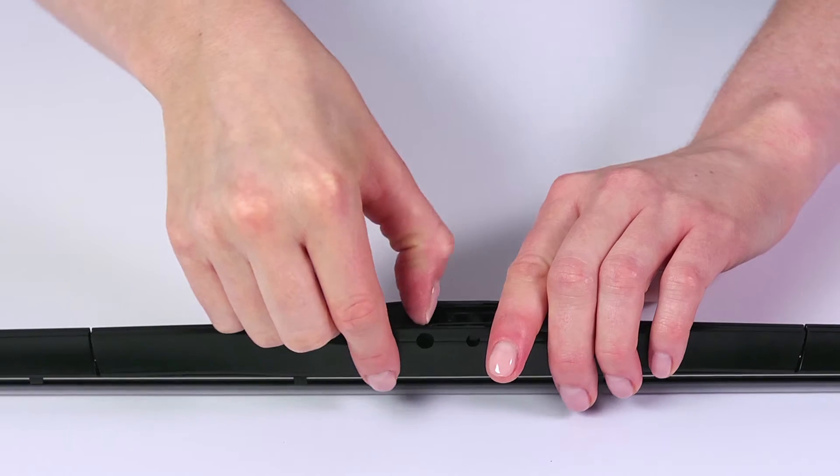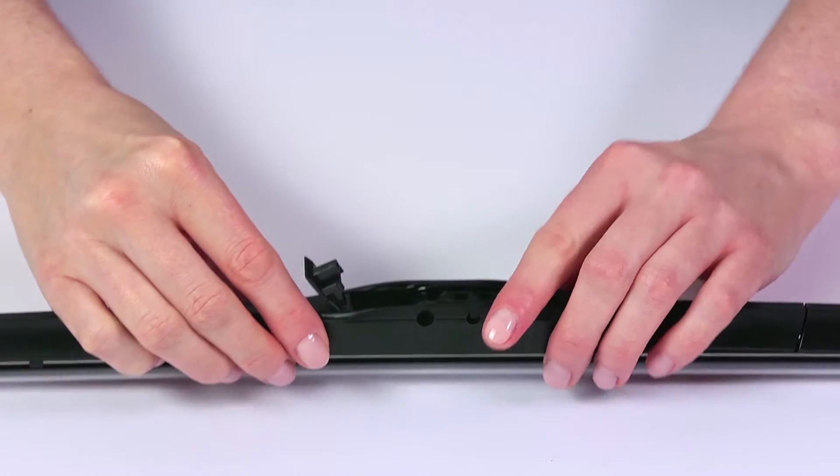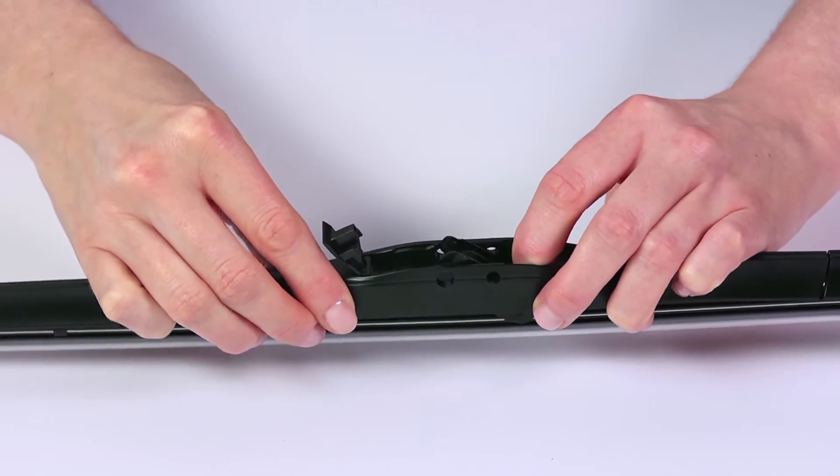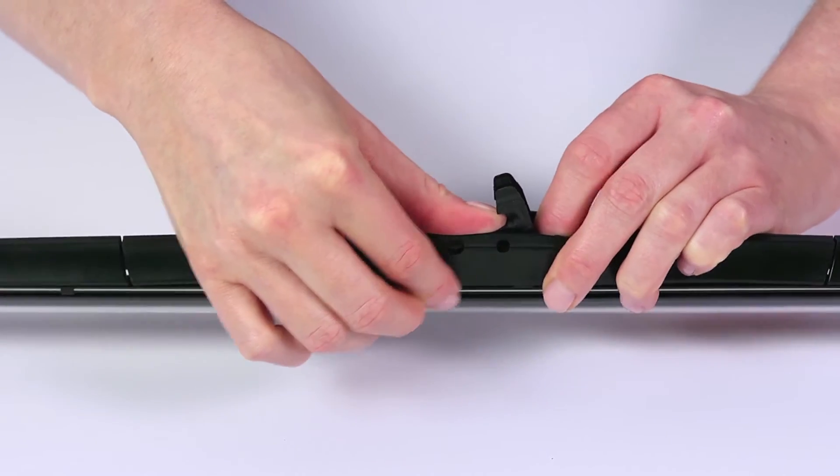To do this, flip up the Rain-X tab on the top of the blade. Rotate the pre-installed adapter down and then push it back to remove it.